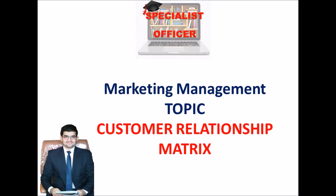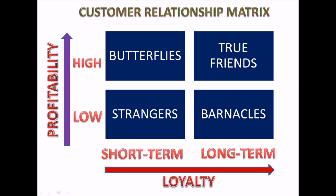Welcome to Specialist Officer. My name is Ankit Pandey. Today's topic is the Customer Relationship Matrix, which is constituted between two parameters: profitability and loyalty. Profitability is further bifurcated into high and low, and loyalty is short-term and long-term. You can analyze this two-by-two matrix in the easiest way.